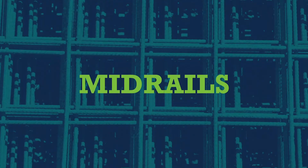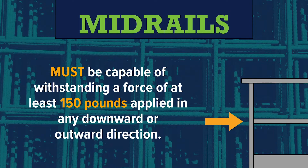A mid-rail is the rail that goes in the middle. OSHA standard does not allow more than 19 inches between each rail — from the top rail to the mid-rail there must not be an opening more than 19 inches. The mid-rail must be able to withstand 150 pounds of force. So the top rail is rated at 200 pounds and the mid-rail at 150 pounds. Mid-rails must be capable of withstanding a force of at least 150 pounds applied in any downward or outward direction.